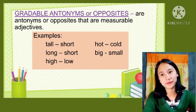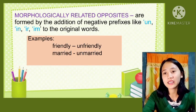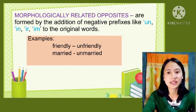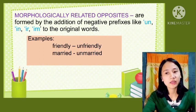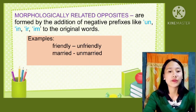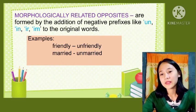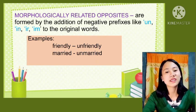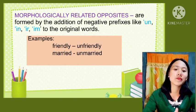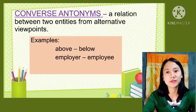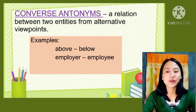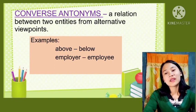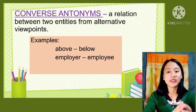The third type is morphologically related opposites. These are formed by the addition of negative prefixes like un-, in-, ir-, and im- to the original words. For example, the word 'friendly' becomes 'unfriendly', and 'married' becomes 'unmarried'. The fourth and last type is converse antonyms — a relation between two entities from alternative viewpoints. For example: above and below, employer and employee.